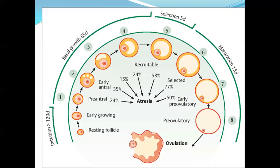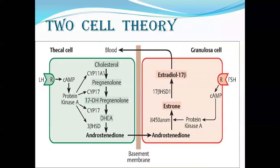A short overview of follicular initiation: approximately 1 to 3 months of follicular growth occurs before the basal growth phase, followed by more than 2 months of basal growth, allowing for selection. Once selected, it is about 15 days of maturation before ovulation occurs.